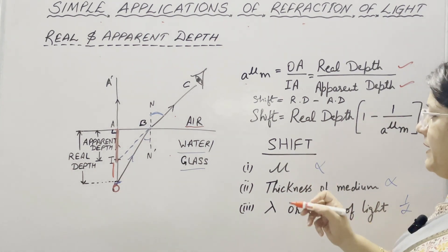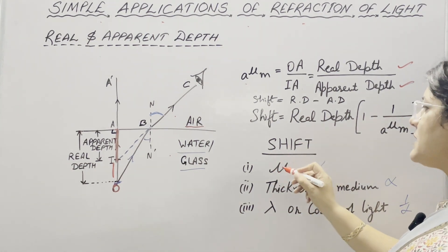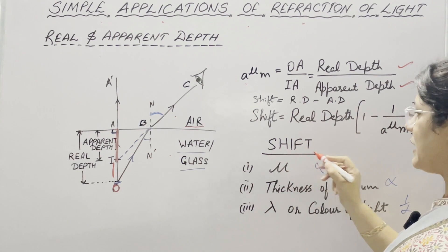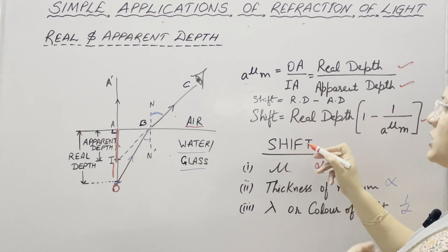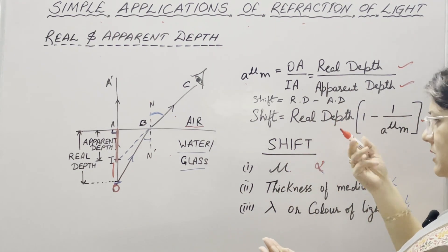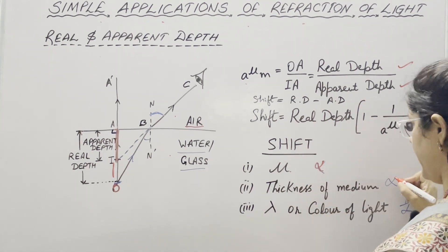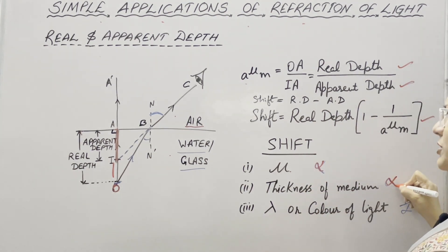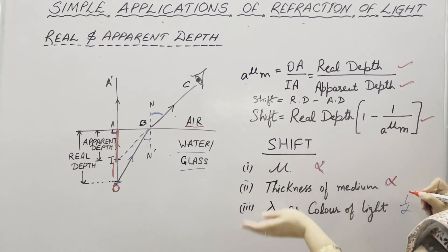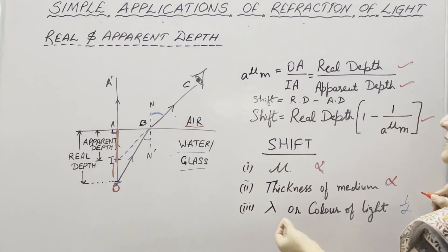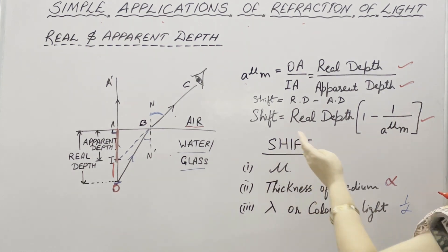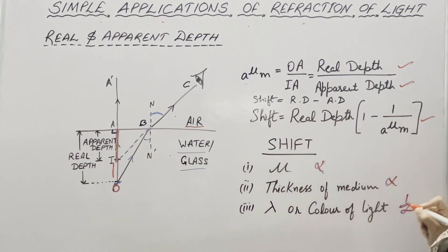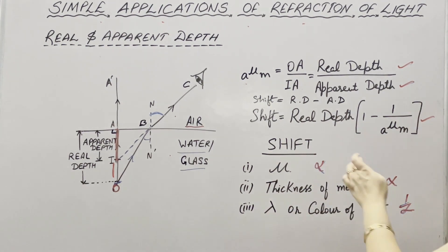Now the factors on which shift depends. First factor is μ, the refractive index — shift is directly proportional to refractive index. When refractive index increases, shift also increases. Second is thickness of the medium — it is again directly proportional; as thickness increases, shift also increases. Third is wavelength or the color of the light. If wavelength increases, then shift decreases — inversely proportional to this third factor and directly proportional to both the first two factors.